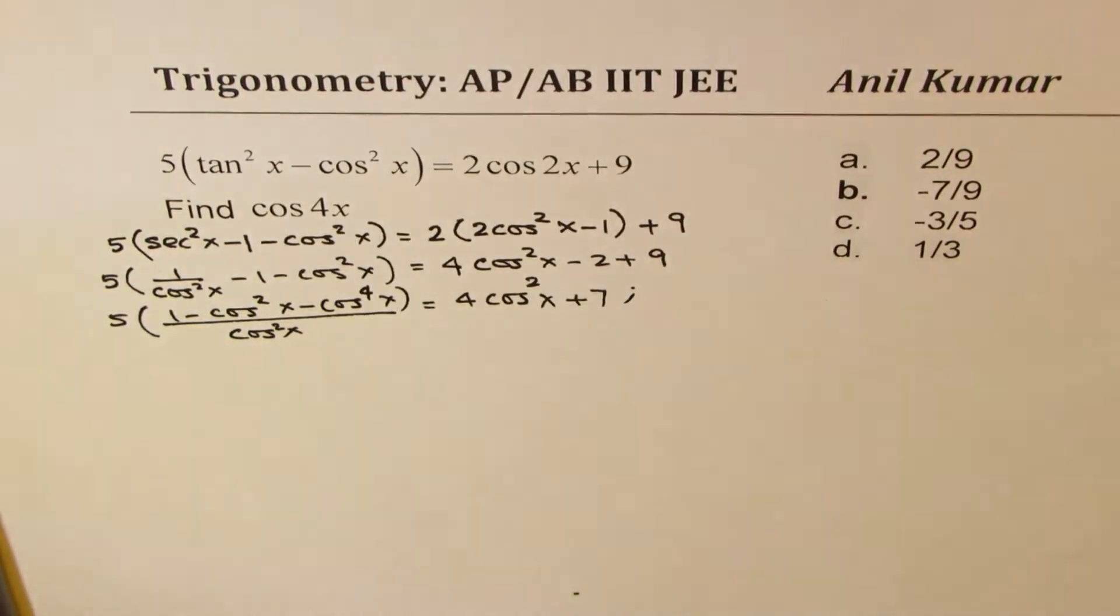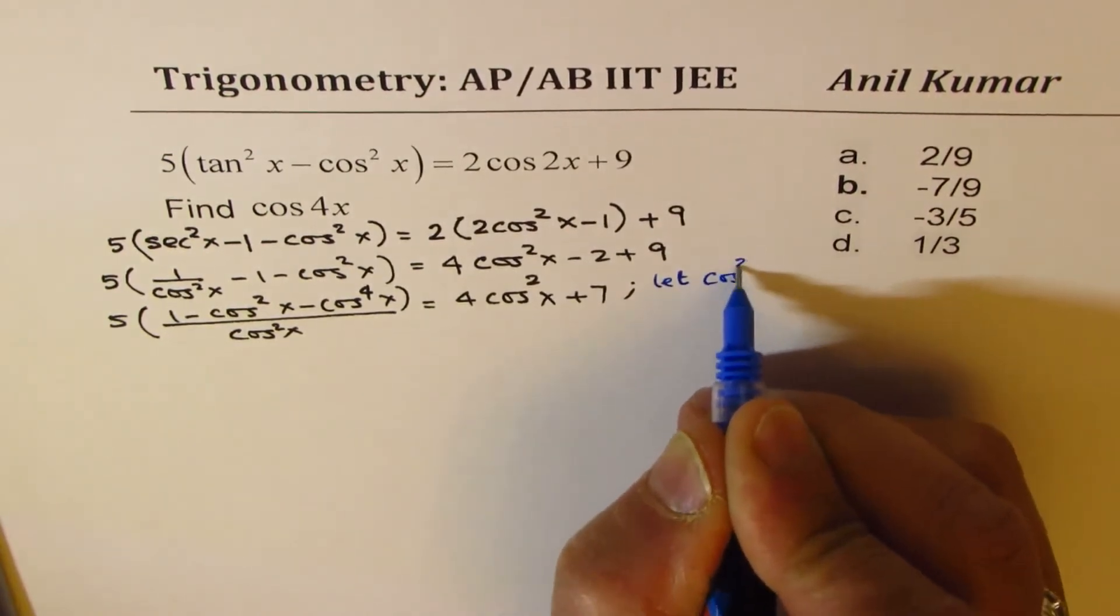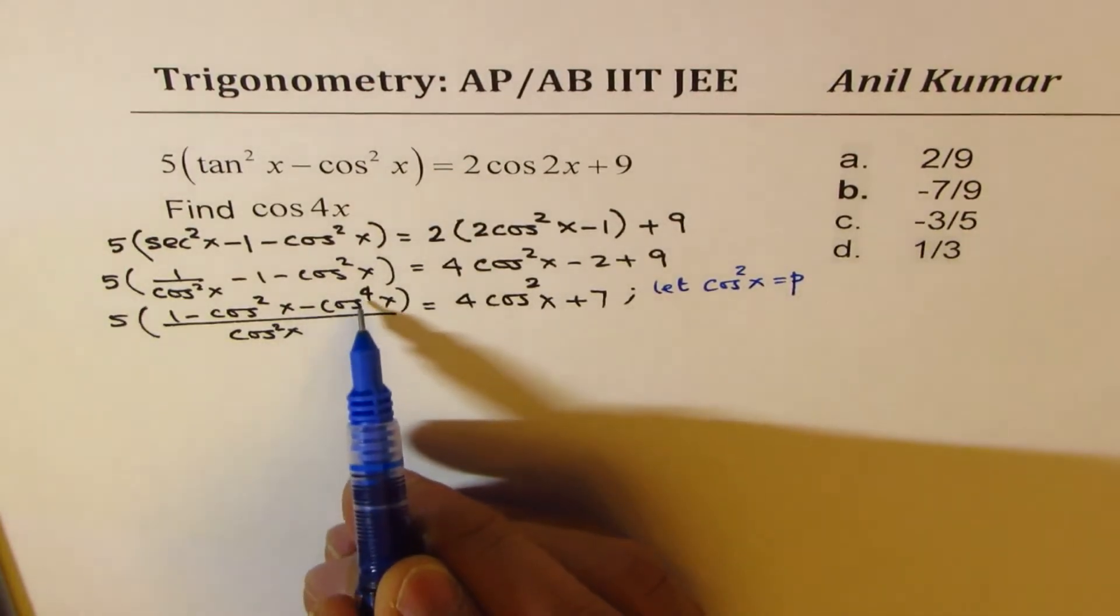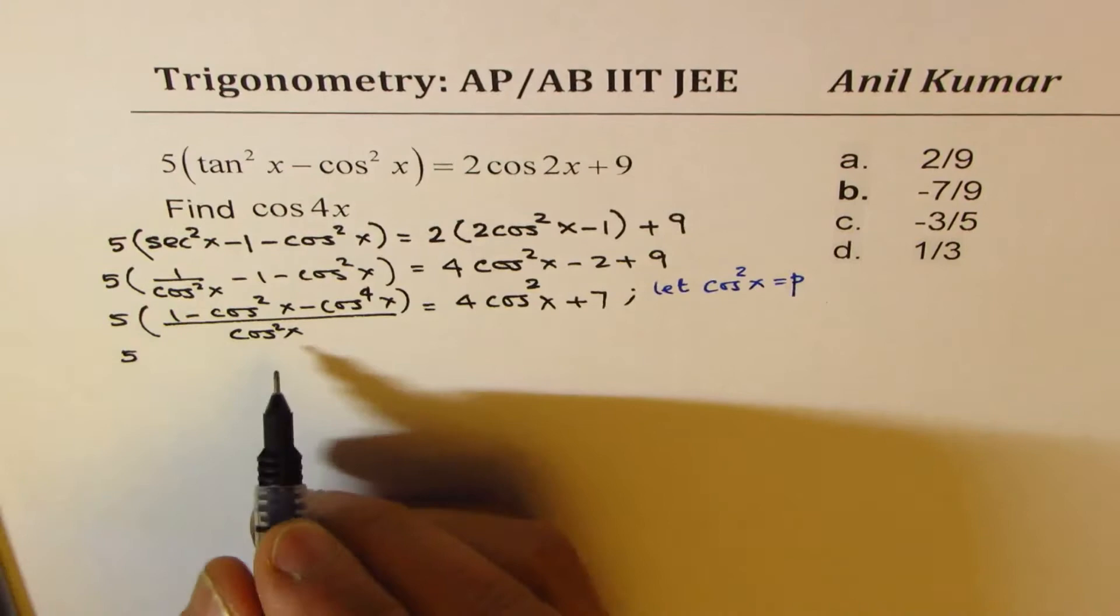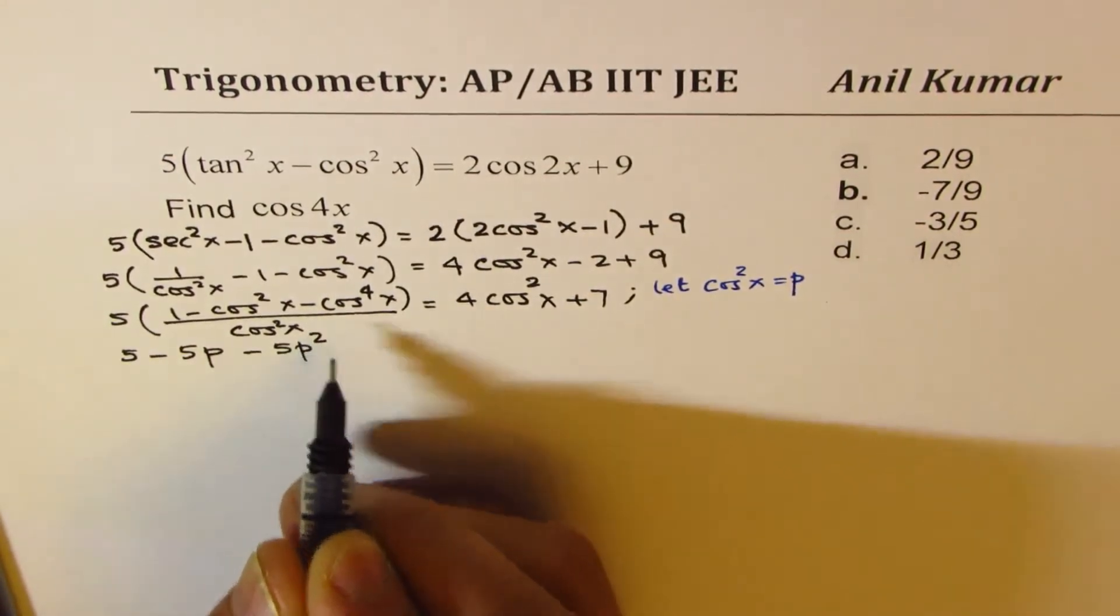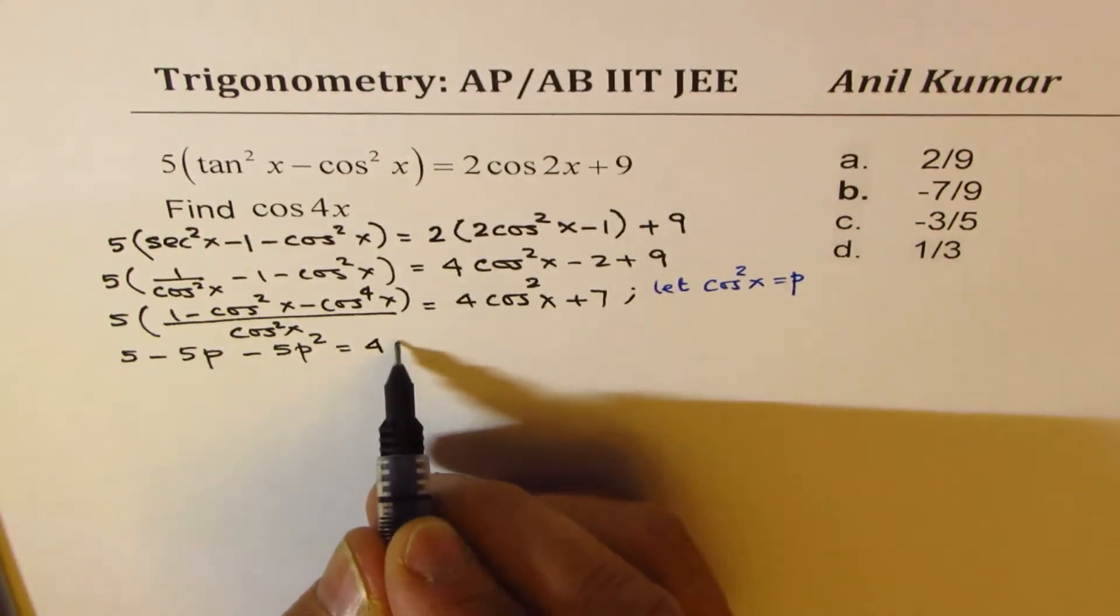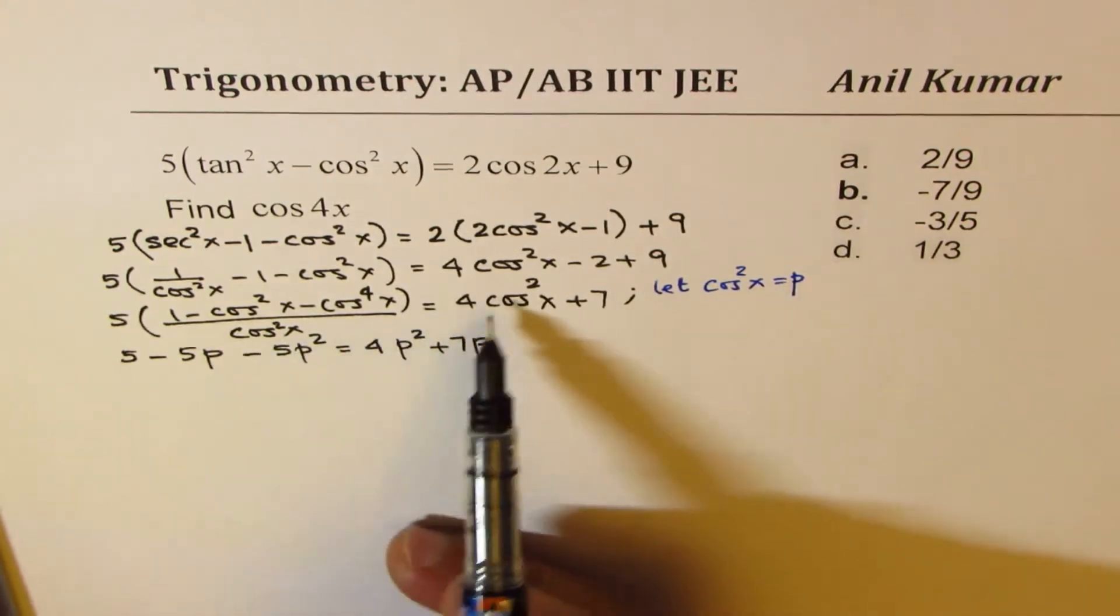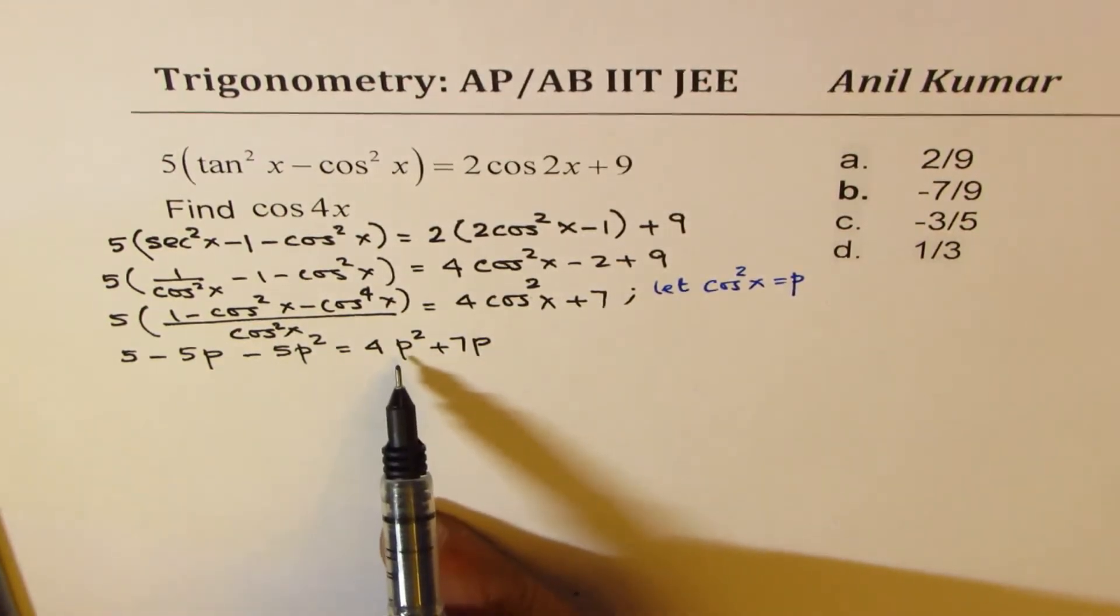Now, we can do a substitution also. Let us write cos square x equals to p. Then we'll get a quadratic equation in p. So we could write this as 5 minus 5p minus 5p square. So cos to the power of 4 becomes p square, since cos square x is p. Now, taking this to the right side, so equals to 4p square plus 7p. We have written cos square x as p. So here you have a quadratic equation in p.